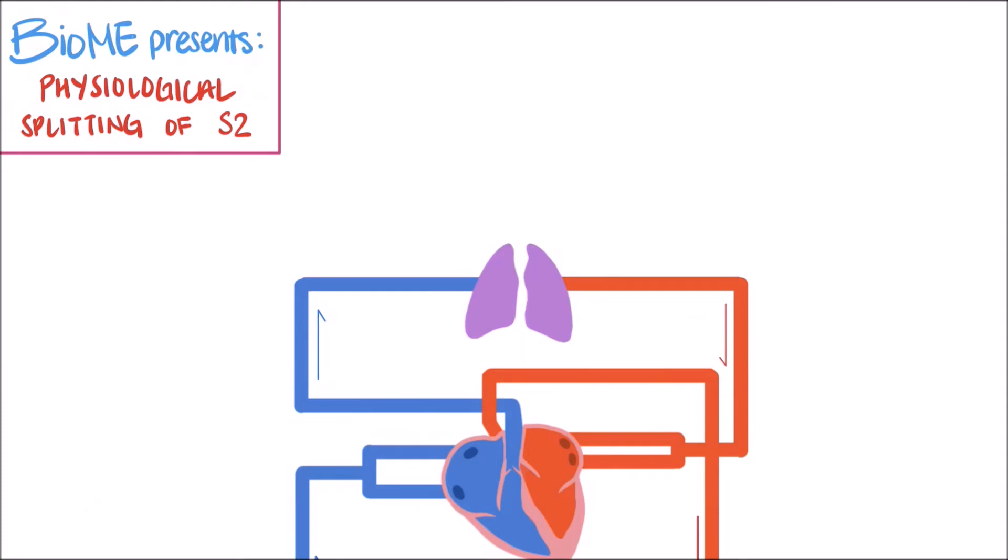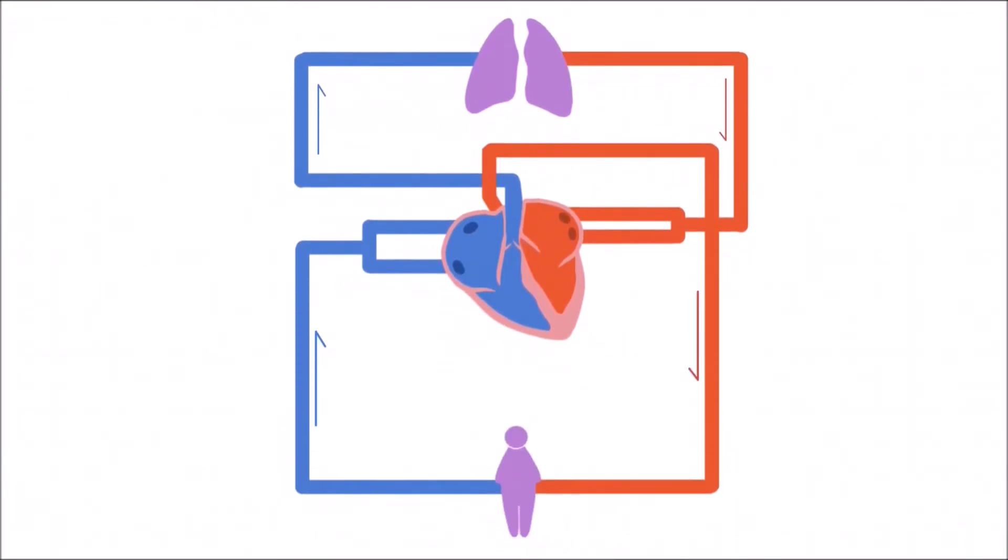This could occur in healthy individuals during deep inspiration or when you're taking a deep breath in. To breathe in, your thoracic cavity expands in order to increase the volume of your lungs so that you can suck in air through negative pressure. The expansion of the thoracic cavity and resulting decrease in intrathoracic pressure also causes a decreased pressure in the right atrium.